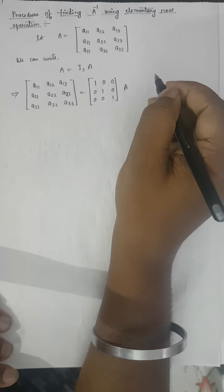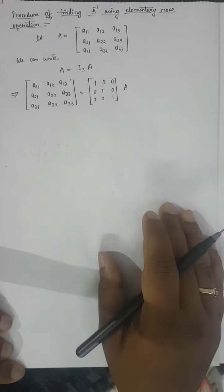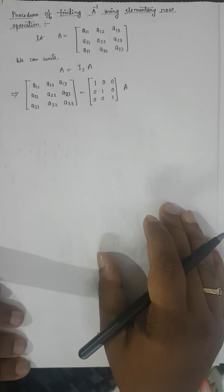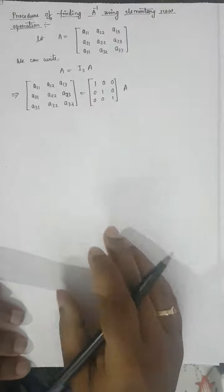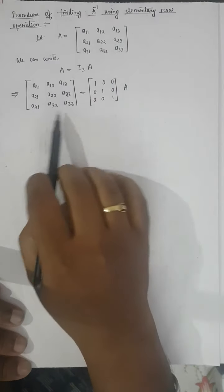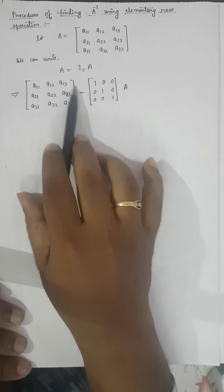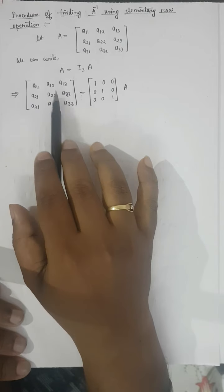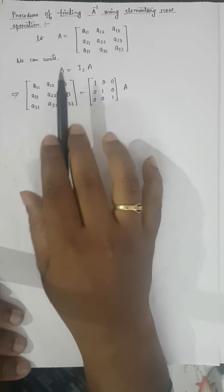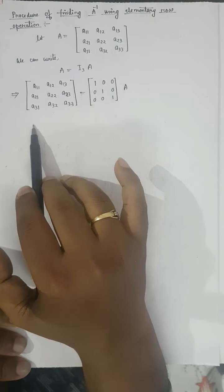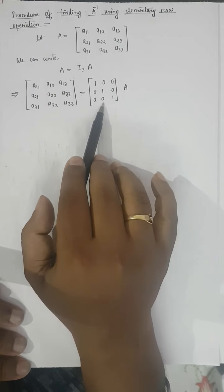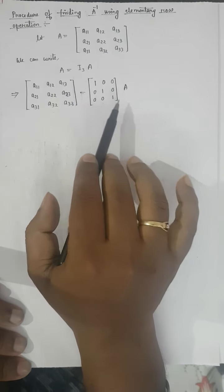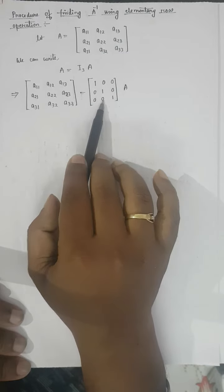We will use elementary row operations with the main goal of transforming matrix A into the identity matrix I. As we do this, I₃ on the right side will automatically be converted into a matrix B, which will be the inverse of A.